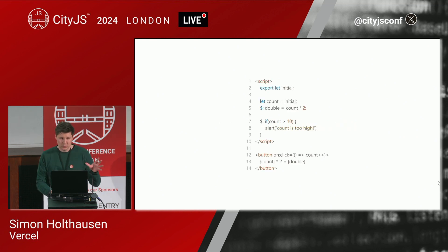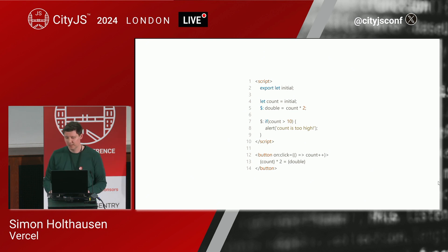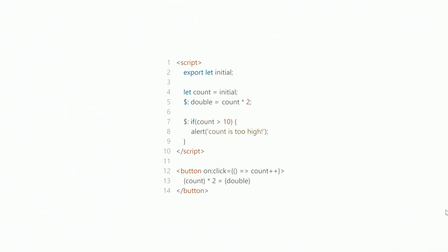We start with a simple counter component, as everybody does. It has a count variable, which we double and then show in the button, and we also have a side effect that alerts you when the count gets too high. The code you see right now is still using the current Svelte 4 syntax. So let's convert it to runes, our new API for expressing reactivity in Svelte.